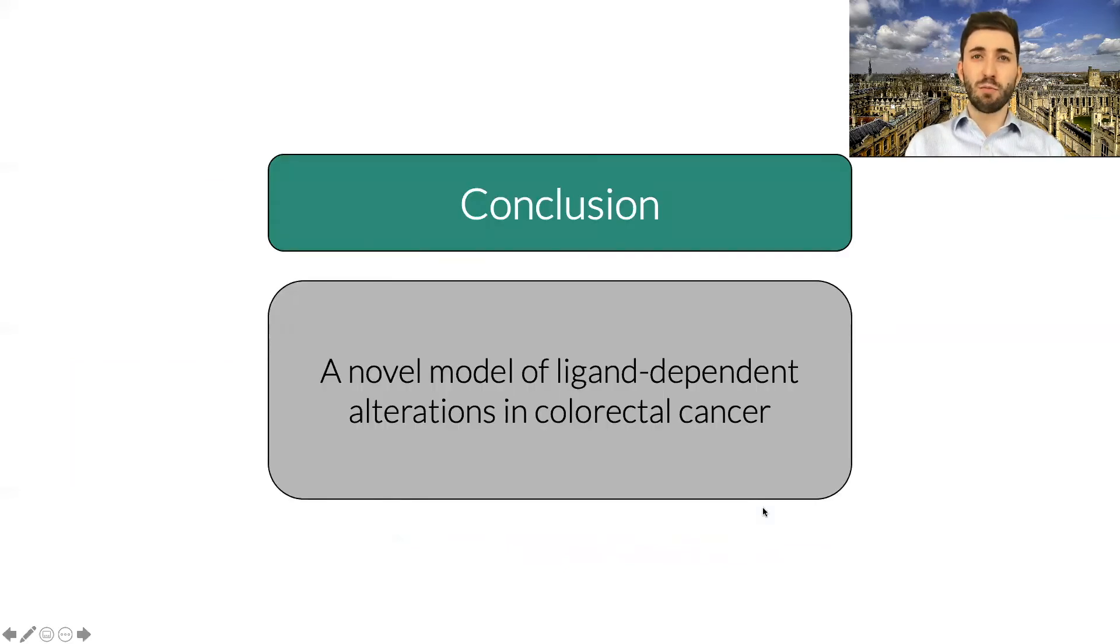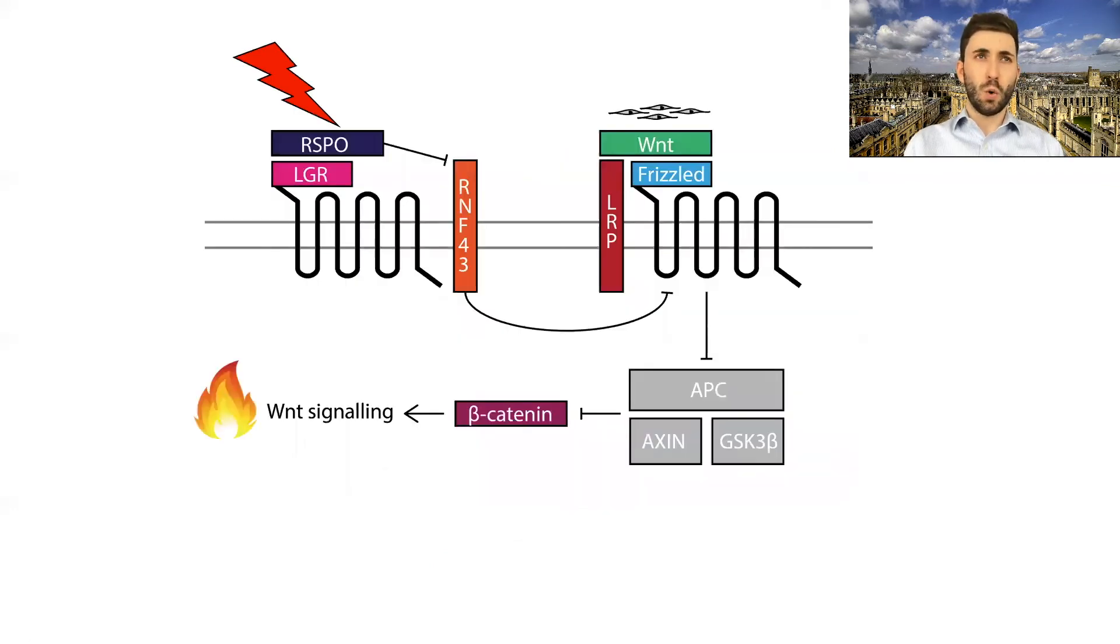We can start to propose a novel model of ligand-dependent alterations in colorectal cancer, based on our findings. We hypothesize that ligand-dependent alterations, such as R-spondin fusions, for example, will cause activation of the Wnt signaling pathway, which is then constrained by proportionate activation of negative regulators, such as Axin2.